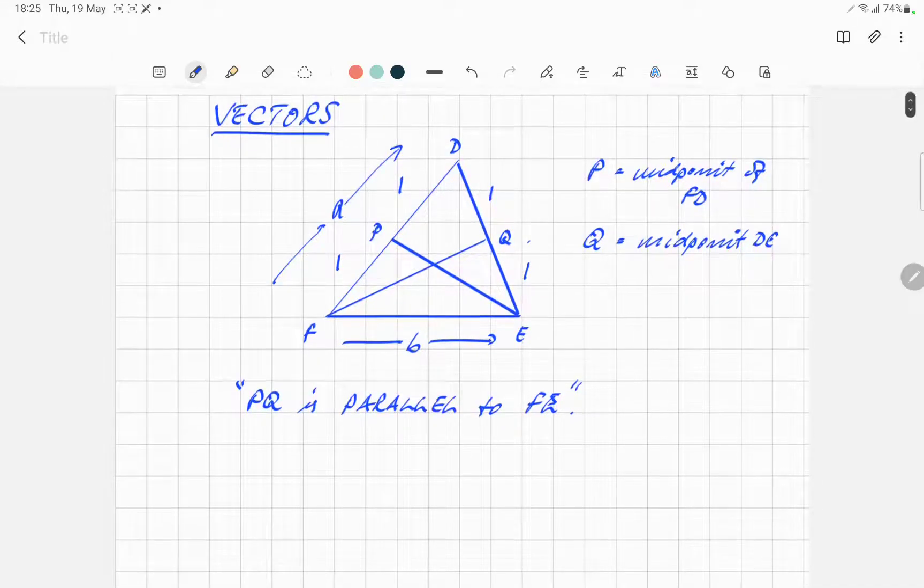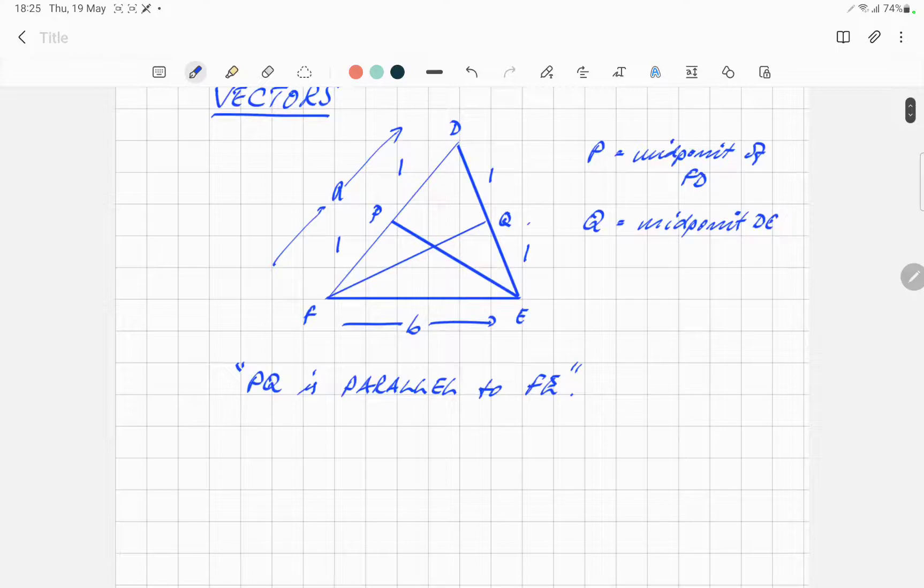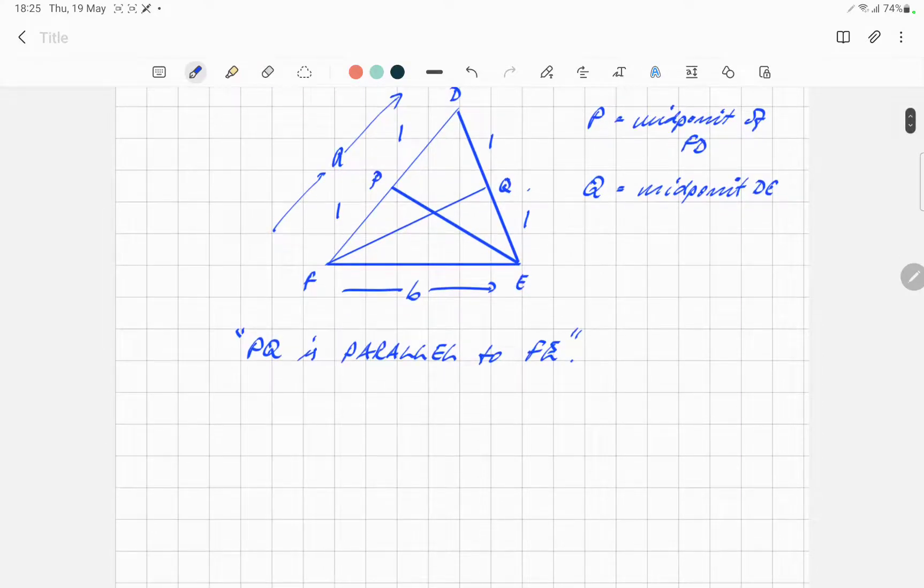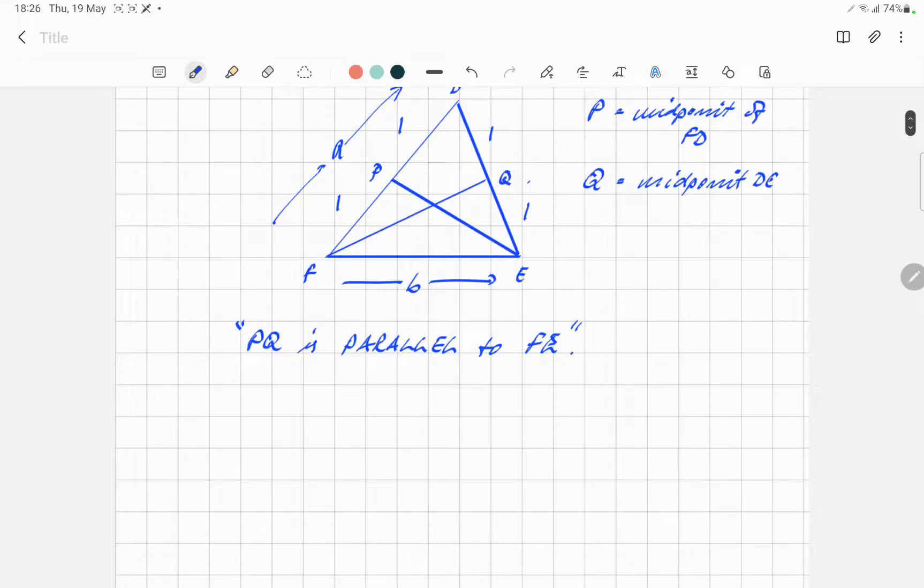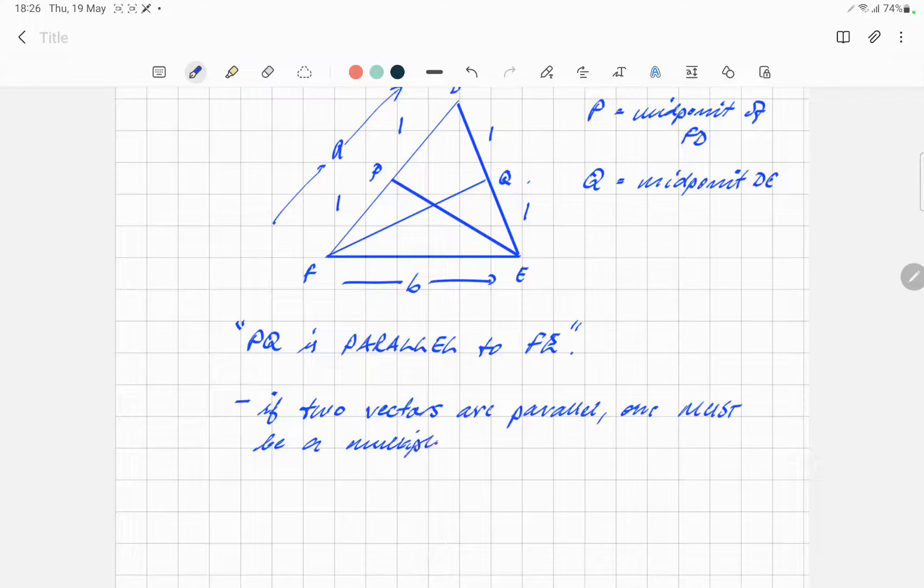Now, when two vectors are parallel, what do we know about them? One is a multiple. One is a multiple of the other. Right? And we can say that in two different ways. If two vectors are parallel, one must be a multiple. One is a multiple of the other.